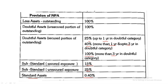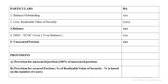Now we need to note down a format. The format has: Particulars and Amount. The first line is balance outstanding — how much balance is yet outstanding. Then less the realizable value of security held by the bank. That gives you a balance. From that, minus DICGC or ECGC — that is the insurance cover percentage on the balance. Whatever answer you get is called the unsecured portion.